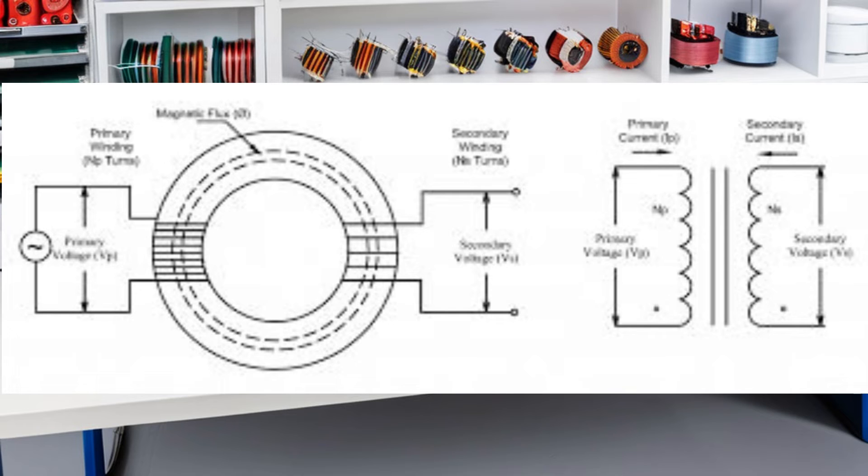We've then taken a deep dive into the way a toroidal transformer works, step by step. We started with the primary winding, where voltage is applied, creating a magnetic field around the core. This magnetic field, we've learned, is what drives the transformation process.